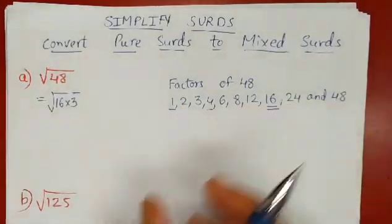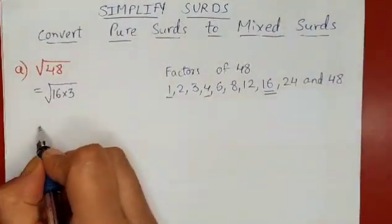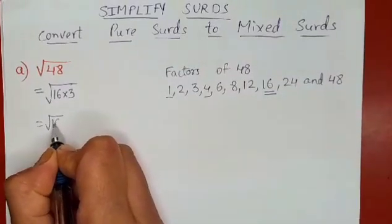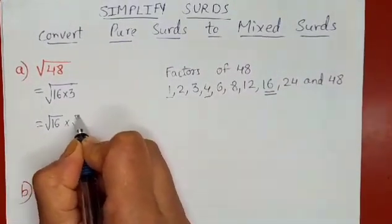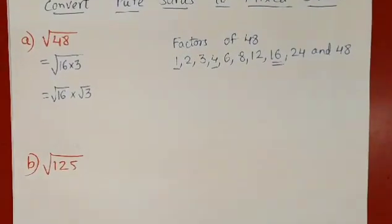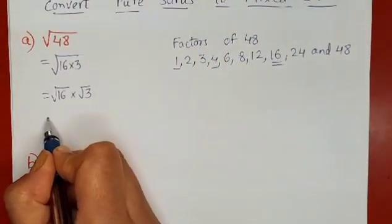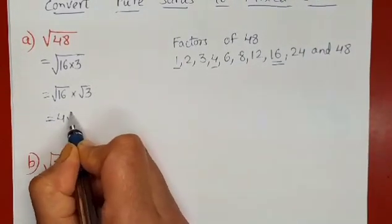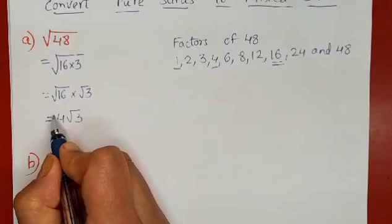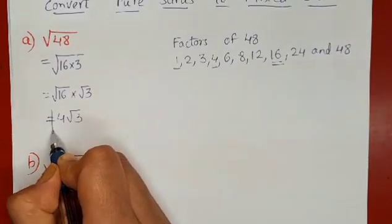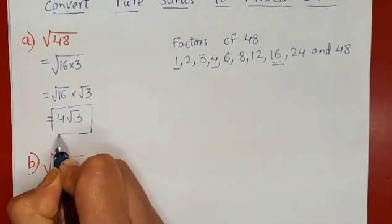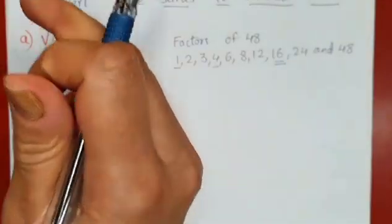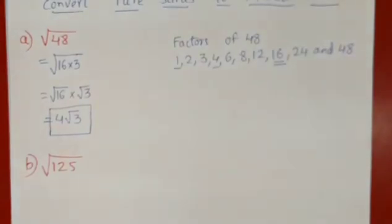Now this can be further split as root 16 and root 3, following the surd rule. Now 16 is a perfect square number, so root 16 is 4, and root 3 is as it is. So 4 root 3 is the mixed surd form of the pure surd root 48. So 4 root 3 is the solution.